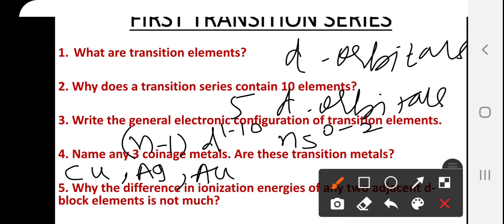Why is the difference in ionization energies of any two adjacent d-block elements not much? The effect of the increased nuclear charge is balanced by the shielding effect. In case of d-block elements, the increased nuclear charge is balanced by the shielding effect, which has an opposite trend — they are reversed to each other. On that basis, the overall difference in ionization energy is very, very small.